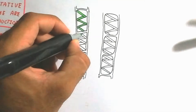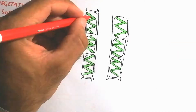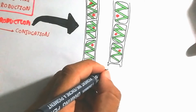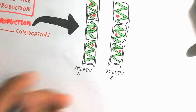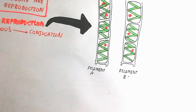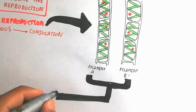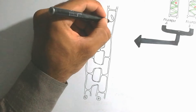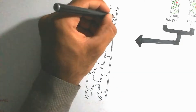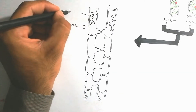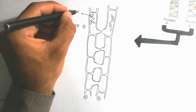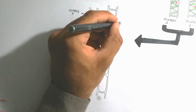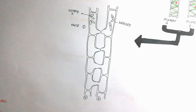In the conjugation process, a spiral chloroplast is present and each cell contains one nucleus. Filament A and Filament B come close together. Gametes are produced as a result of cell division. The gametes from the filament are haploid — meaning the chromosome number is half.